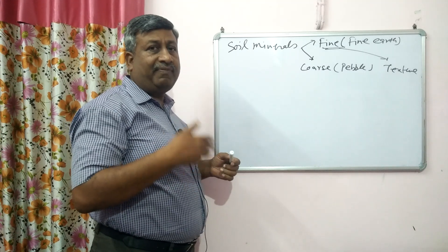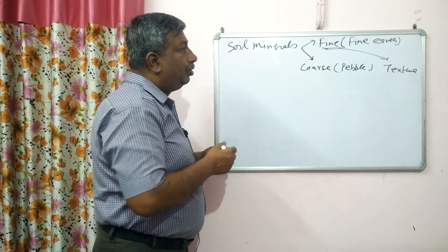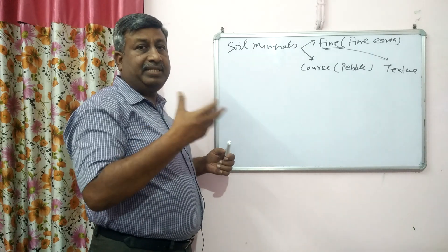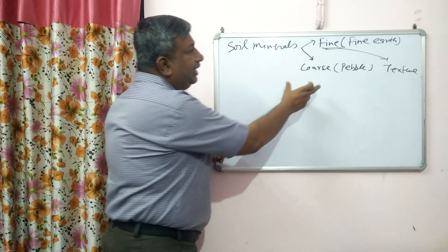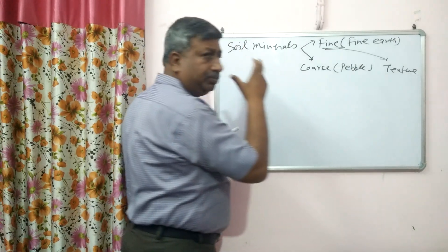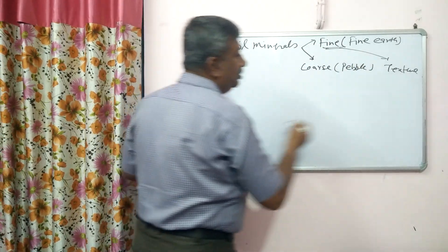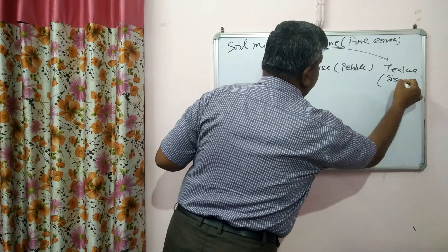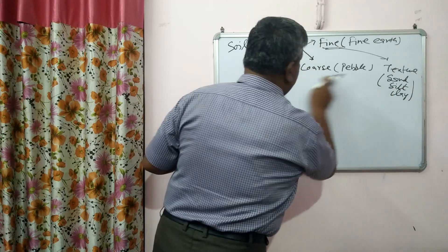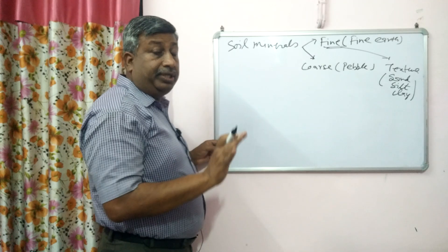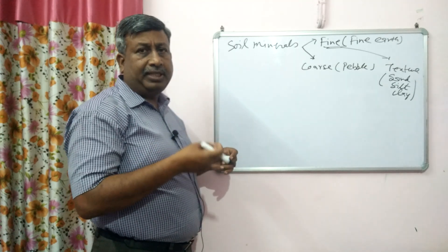Soil particles can be divided into two groups. One is fine earth, and texture is the relative proportion of sand, silt and clay. In texture, these pebbles and stones are not included. Soil texture is the relative proportion of sand, silt and clay.